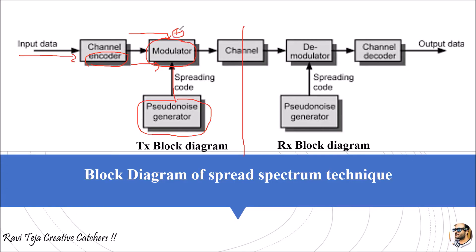This unique PN code is added to the encoded signal, producing a modulated signal that contains both the data we want to send and the unique pseudo noise code.